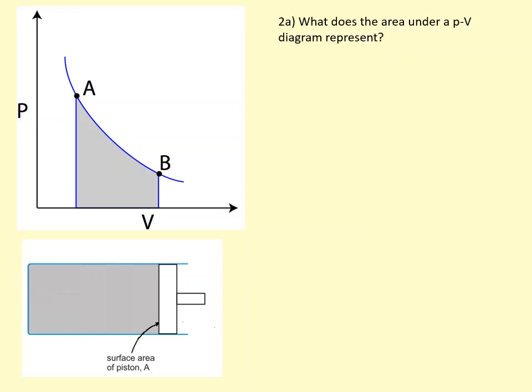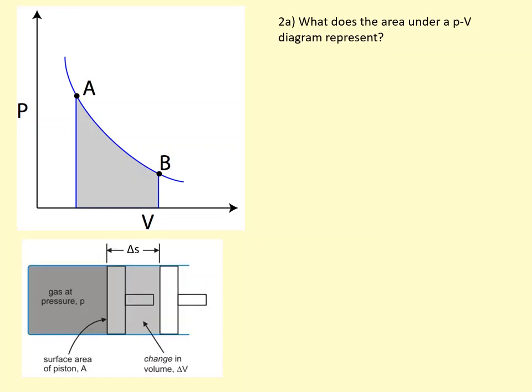What does area under a PV diagram represent? To think about this, we need to look at this piston at the bottom here. It's got a cross-section area of A, and when I compress it, I've reduced the volume by delta V by moving a distance delta S. This has left the gas inside at pressure P. The area under a graph, you can think of it as if you chop it up into slices, very thin slices, it will be delta V times the pressure at that point. So the area is going to be P times delta V.